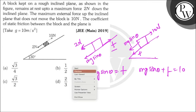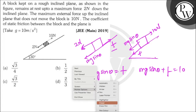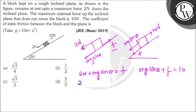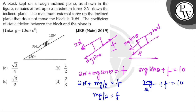Here θ gives sin θ = 1/2 and cos θ = √3/2. Substituting sin θ: 2 + mg/2 = f, and mg/2 + f = 10. We can isolate mg/2: mg/2 = f − 2. Substituting back: f − 2 + f = 10, so 2f = 12, therefore f = 6.